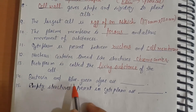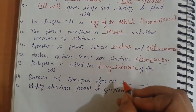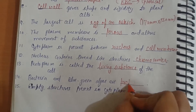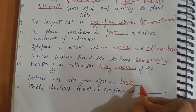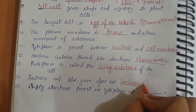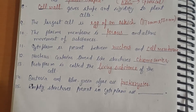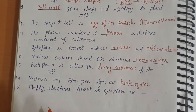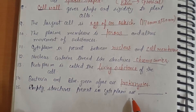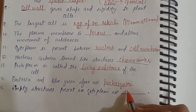Bacteria and blue-green algae are prokaryotes — they lack a nuclear membrane. Empty structures present in the cytoplasm are called vacuoles.